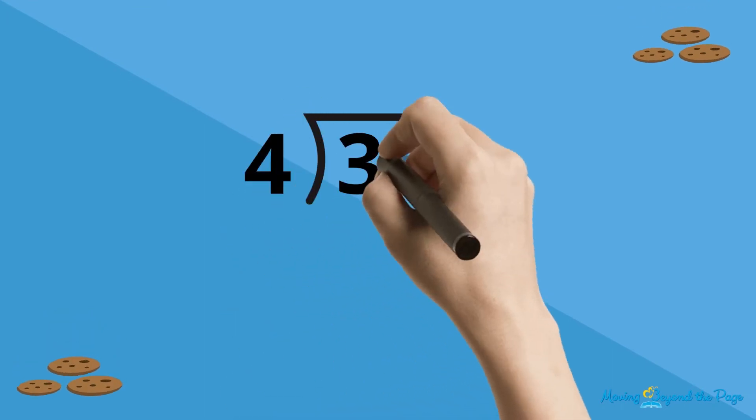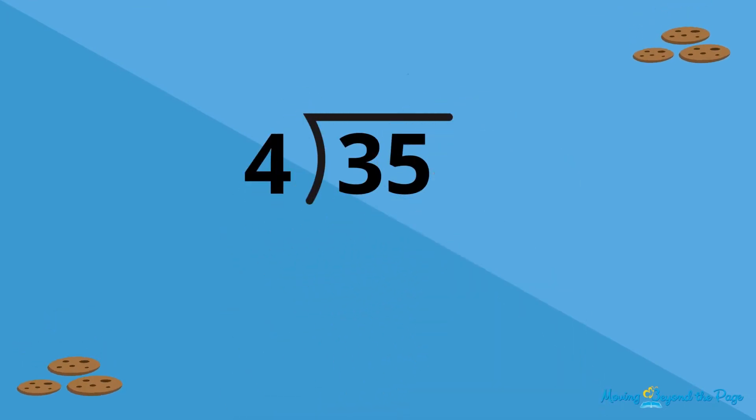So you divide 35 by 4. 4 goes into 35 eight times. 8 times 4 is 32, and the remainder is 3. So your quotient is 8 remainder 3.